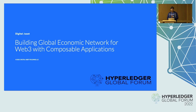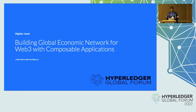Building composable applications is a key requirement for any ecosystem to thrive and grow organically. Do smart contracts and blockchains have a role to play in building composable applications and architecture to form the building blocks of the next generation of global economic network, where transactions and assets flow seamlessly across organizational and national boundaries?